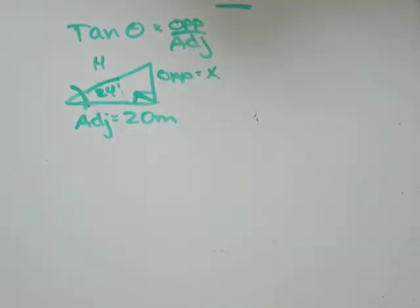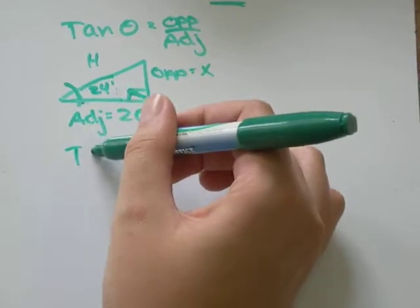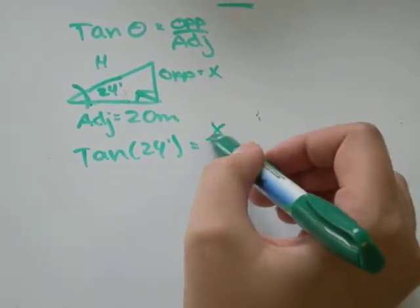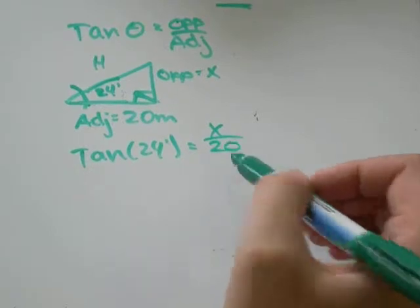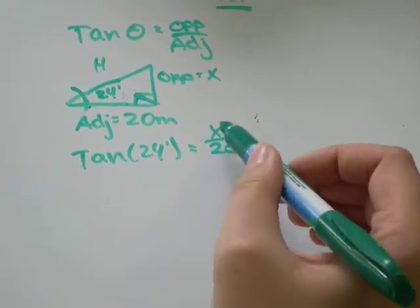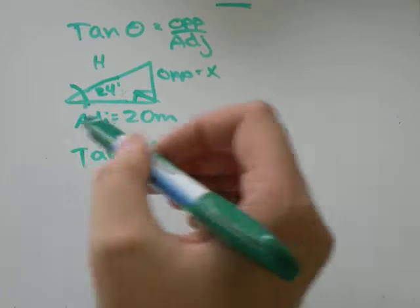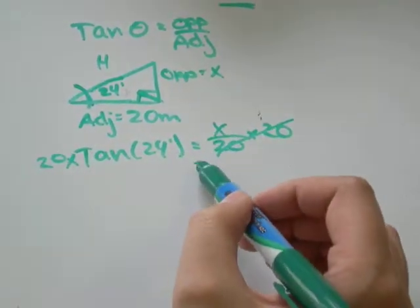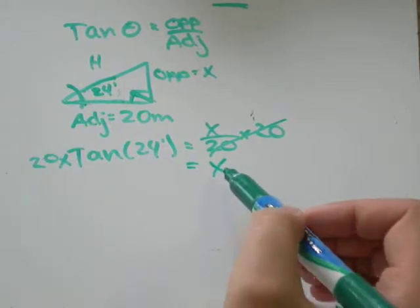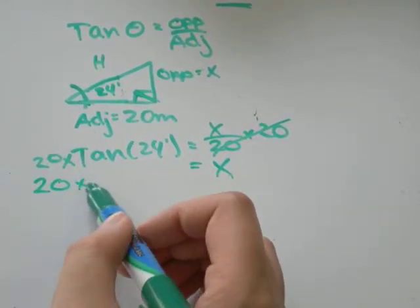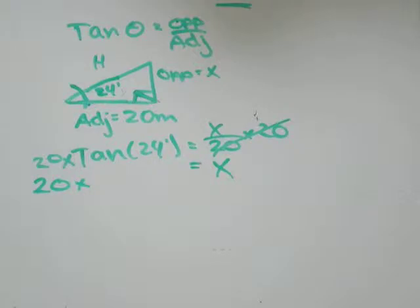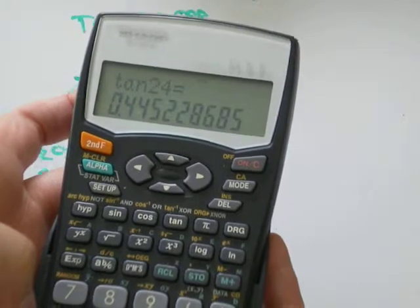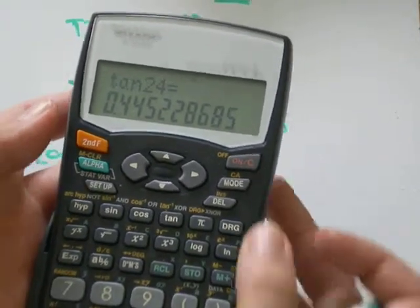Plug in everything you know into the equation. Tan of theta equals 24 degrees is opposite, our unknown, over adjacent is 20 meters. The opposite of dividing by 20 will be multiplying by 20. So, I'll do that to both sides. My 20s will cancel out. And I'll get just my variable equals 20 times tan 24 degrees. On my calculator, I'll go tan 24 equals about 0.445.